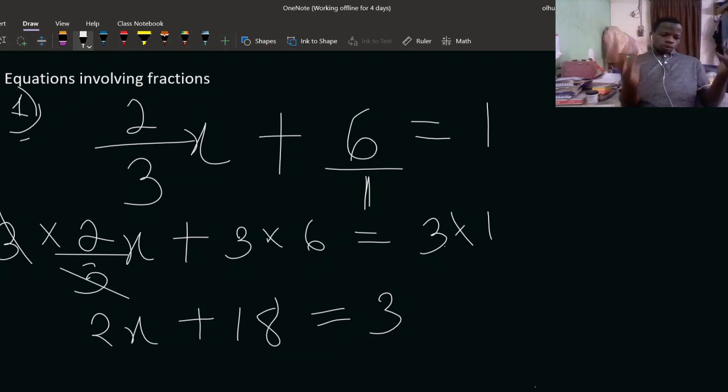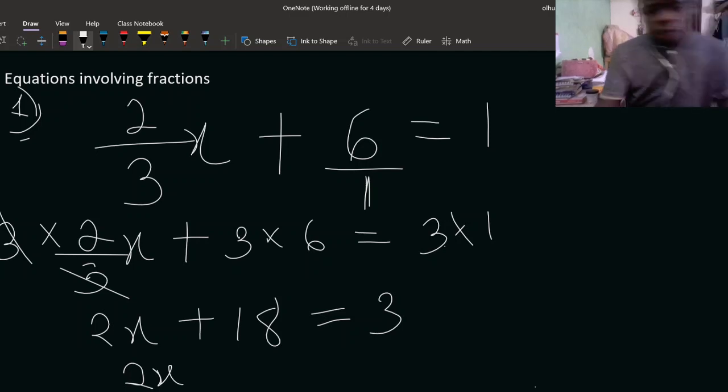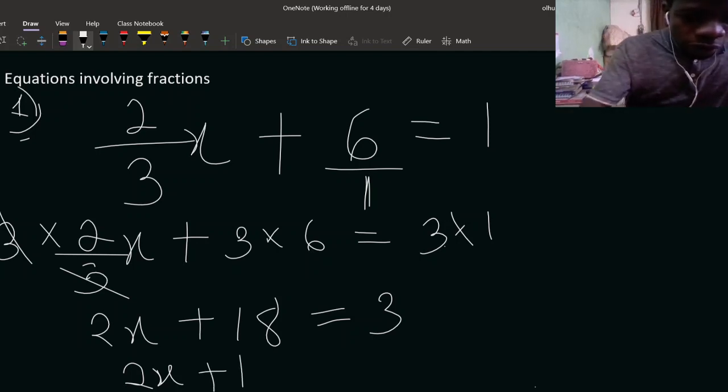So what do we do now? You collect like terms such that you have your 2x. You can subtract 18 from both sides. That means this side you have, because you are trying to get rid of 18, you are looking for x. 2 is multiplying x plus 18, so it's 18 you get rid of first. You have plus 18 minus 18 minus 18 is equal to 3 minus 18.